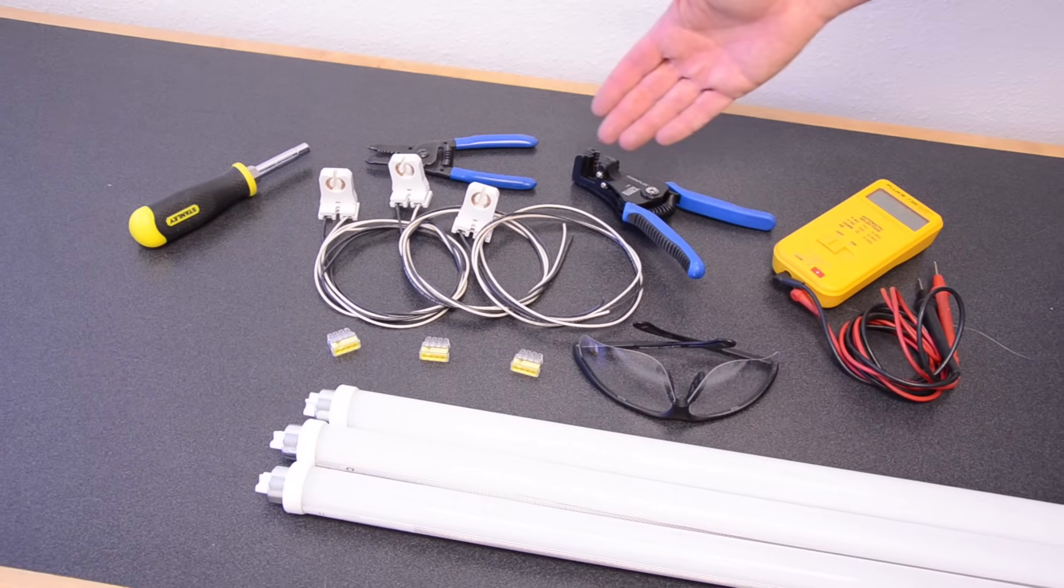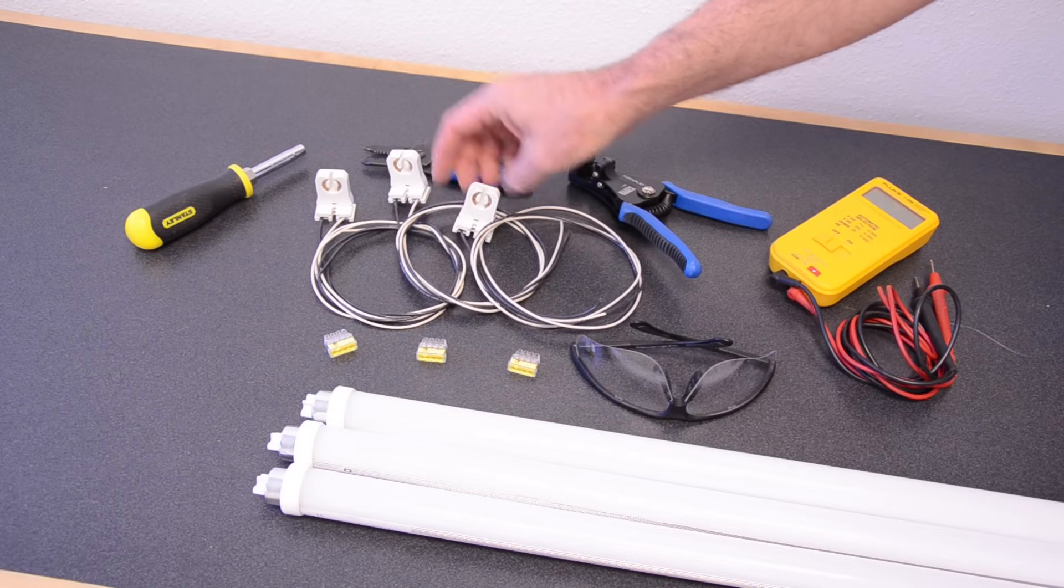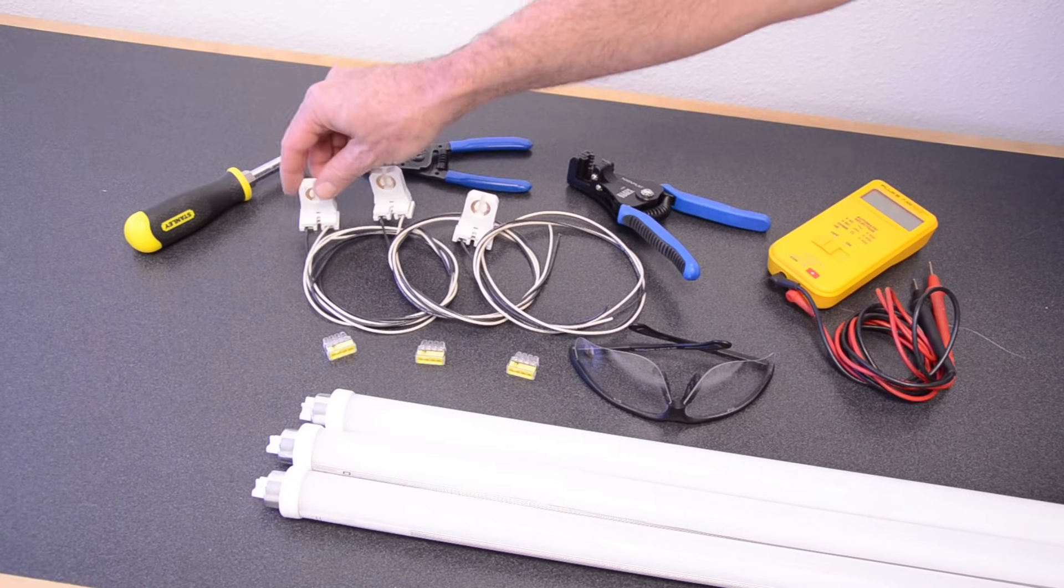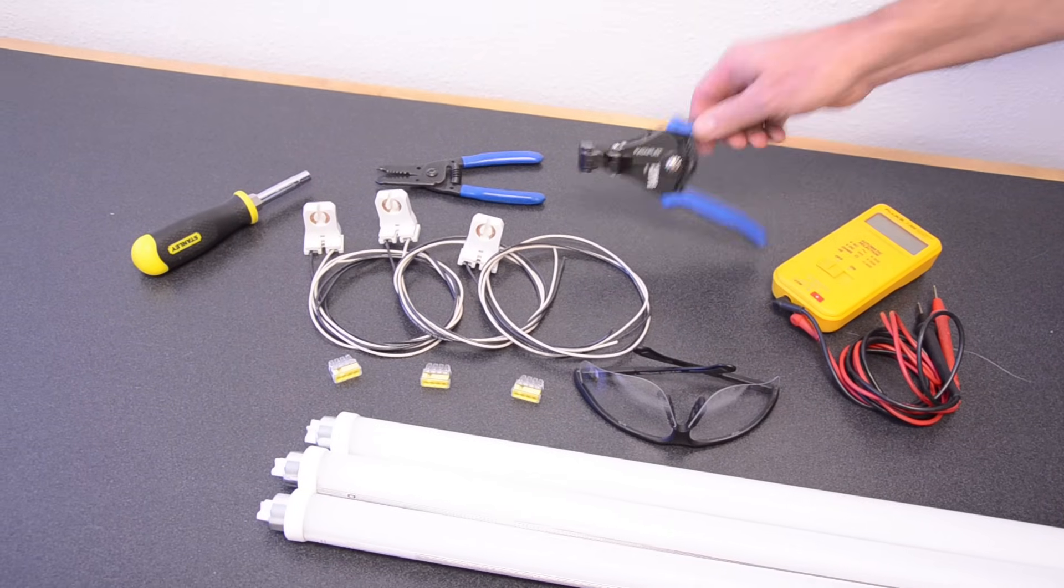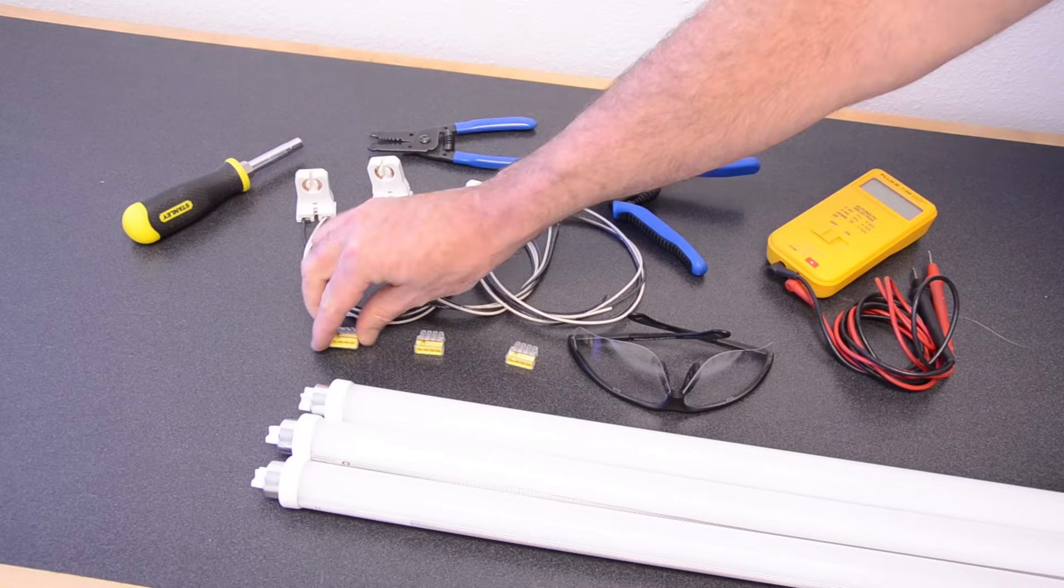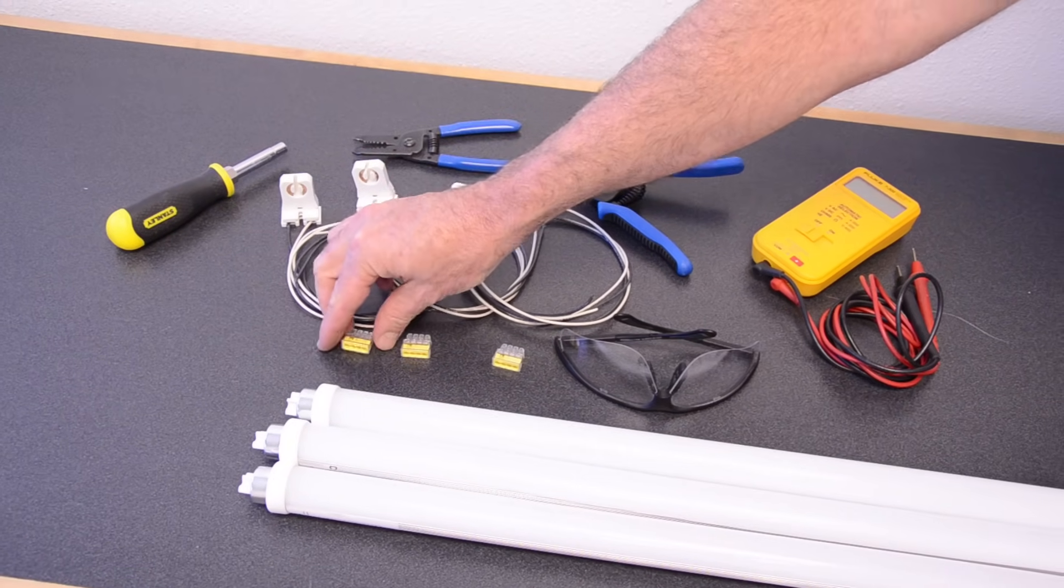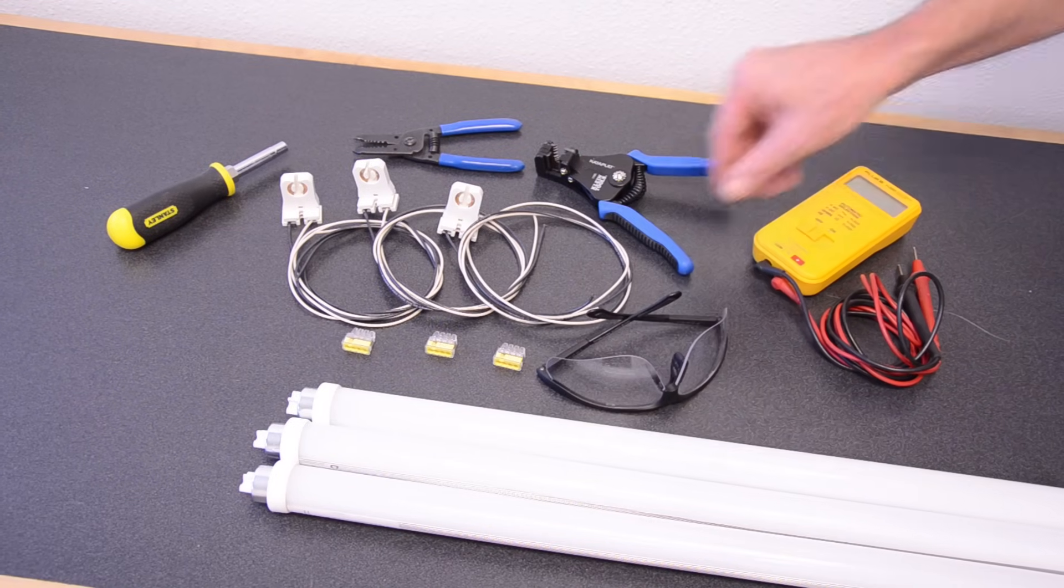Here's some of the tools that are required to do this job today. It's actually very simple. The little socket and wiring kits. These come with each of the LED tubes. Wire cutter. Our favorite wire stripper. We got this down at Home Depot. Nut driver. We also include the little wire devices.